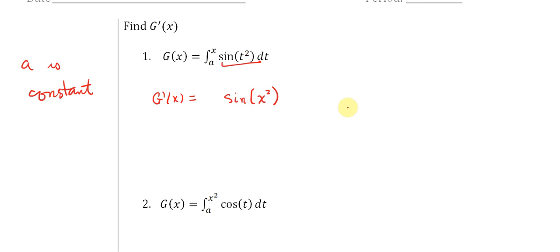But what this says is something quite profound, that sine of t squared has an antiderivative. Its antiderivative is g of x, which is the area function for sine of t squared.